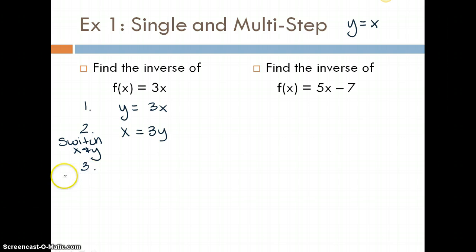The next thing that you do is you solve for y, or for the new location of y. So in this case, we have x = 3y. Well, to get rid of the 3 that is being multiplied to y, you're going to do the opposite, which is division. Now we have x divided by 3 = y. The last step is to rewrite using f inverse of x. So that gives us f inverse of x is now equal to x divided by 3.